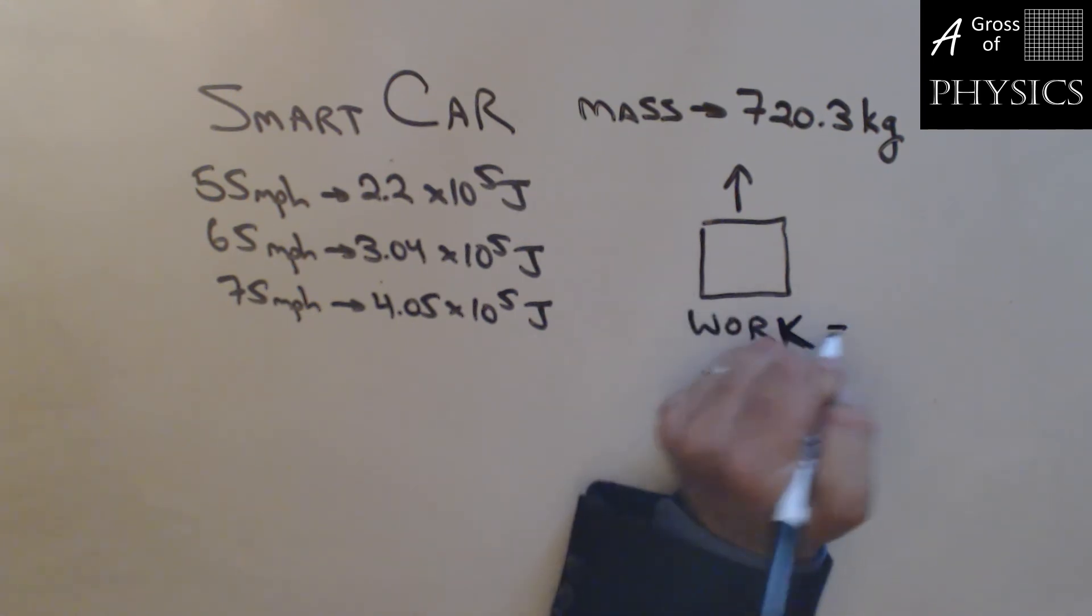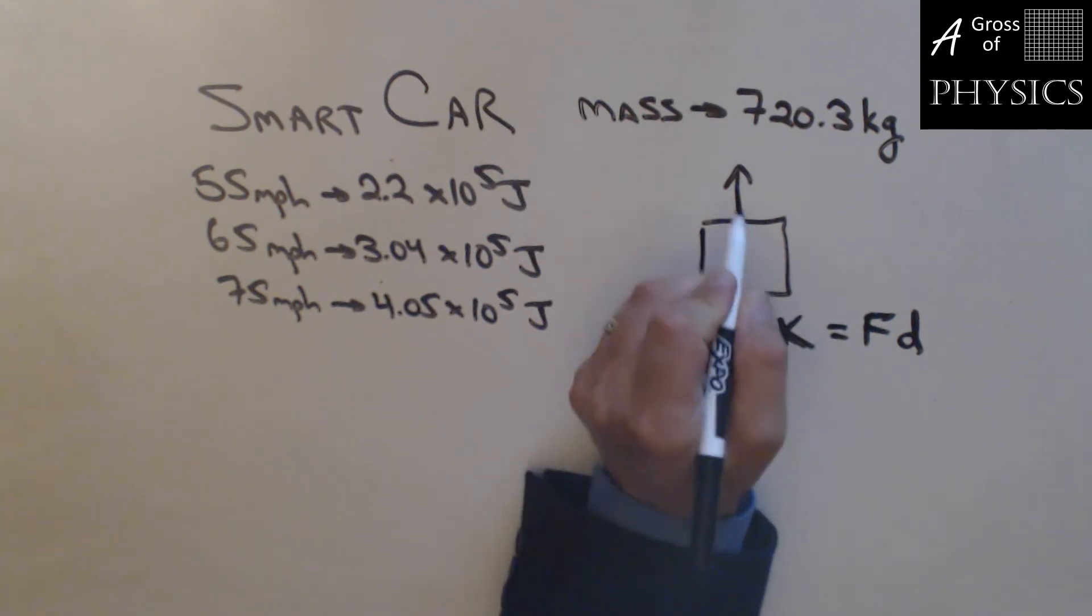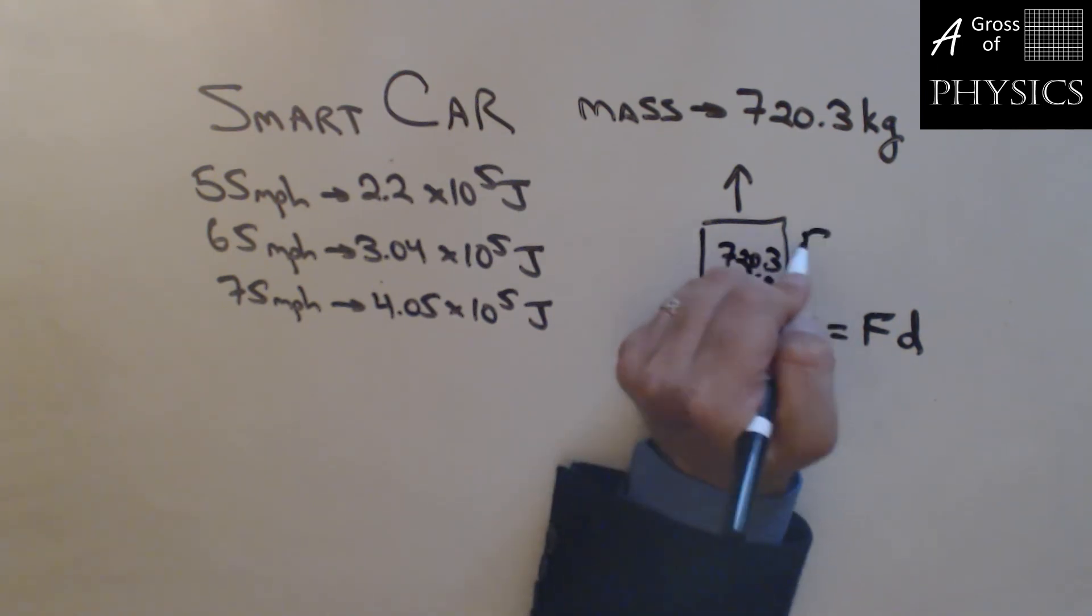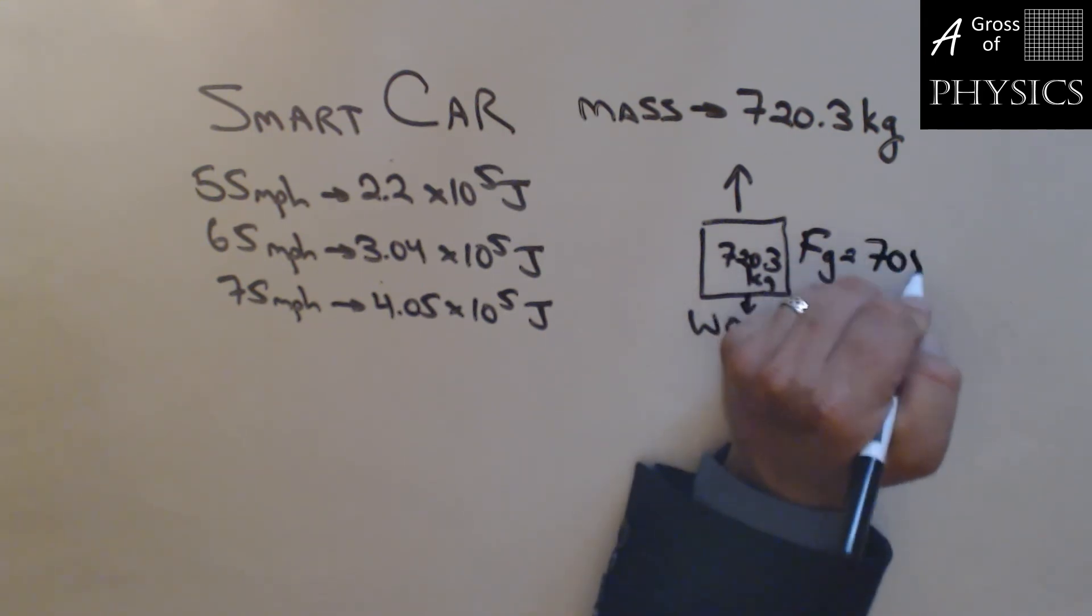Remember, work is force times distance. The work is going to be the amount of energy that it has. The force is going to be fighting gravity. If 720.3 kilograms is the mass, the force of gravity is going to be 720.3 times 9.8, or 7059 Newtons.